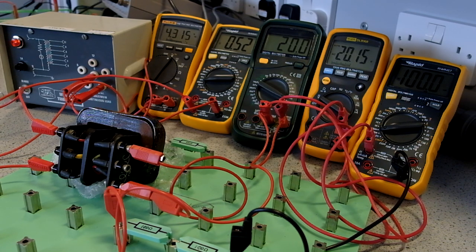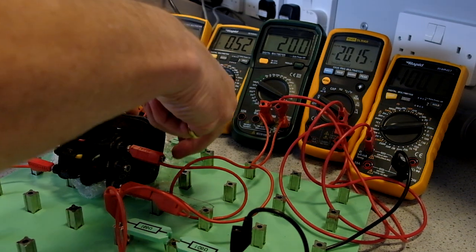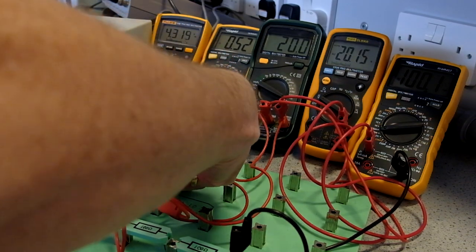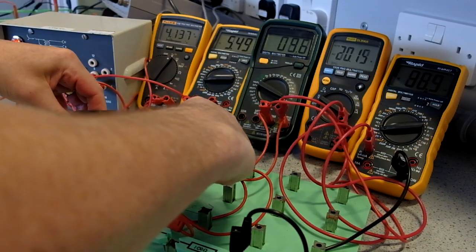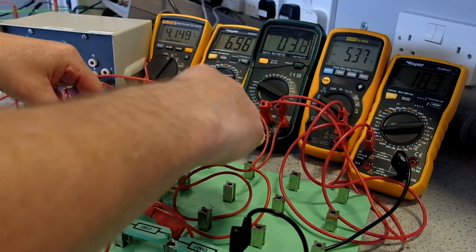Given that we've got hysteresis and eddy core losses, why do we have a metal core? If we don't have a metal core, then we won't have very good magnetic flux linkage. We can demonstrate that by removing this clip and breaking the magnetic path through the metal.